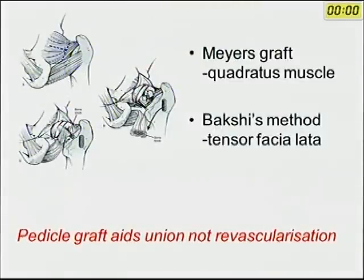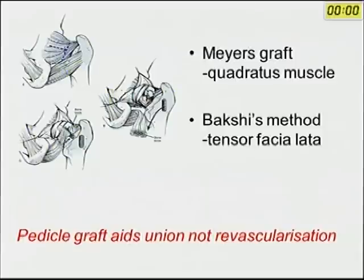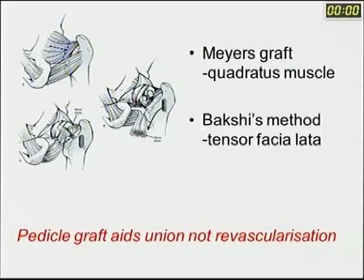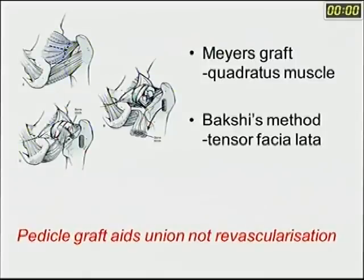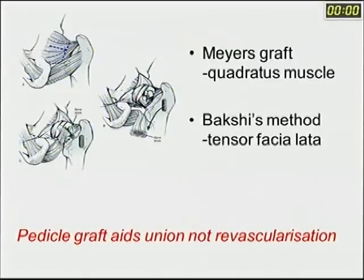Vascularized grafts — including Meyers' quadratus muscle pedicle graft, Bakshi's tensor fascia lata graft, or Davy's sartorius graft — all aid in union but not revascularization. This is an important distinction.